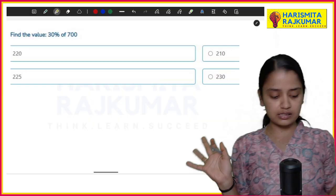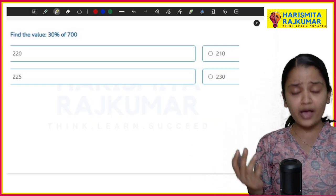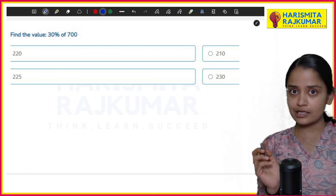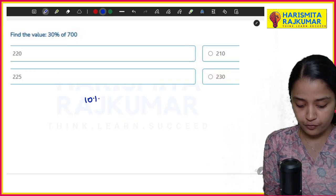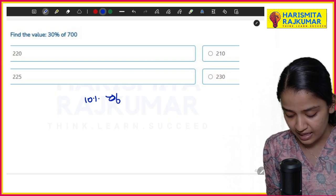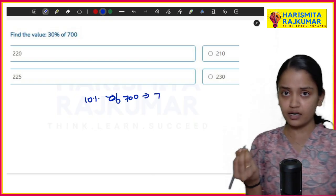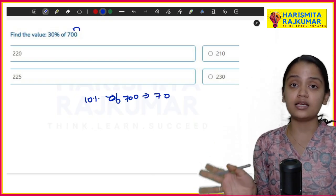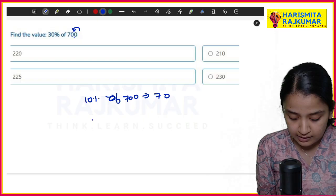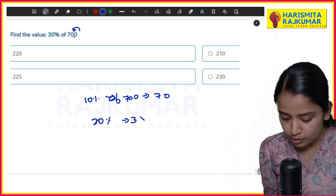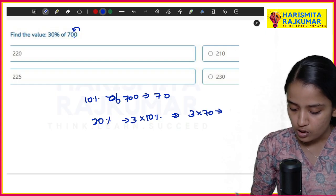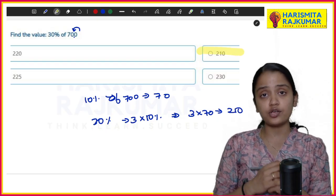Now let's go to the easier one. This is a really easy question where using simple method I'm finding 30%. As in my calculation what I told, 10% of 700 is nothing but 70 because I'm just putting a point here, right? And 30% is nothing but 3 × 10%, which is 3 × 70, which is 210. So your answer for this is 210.